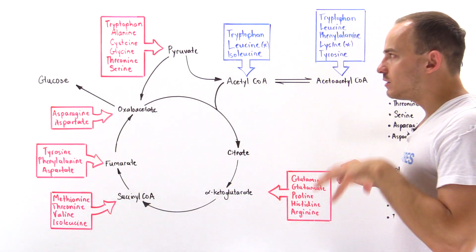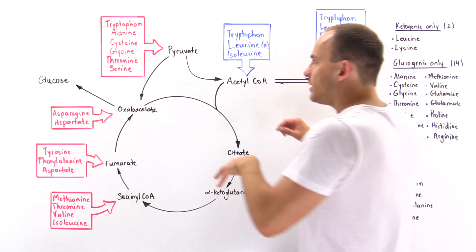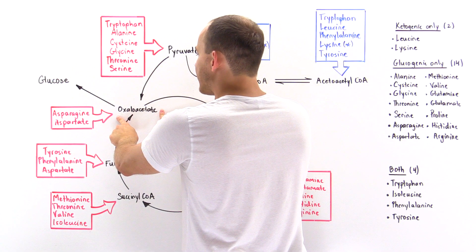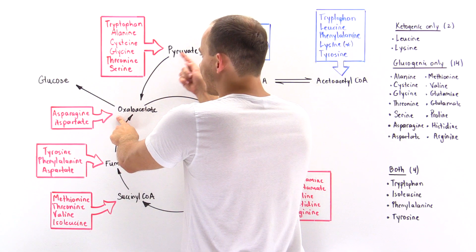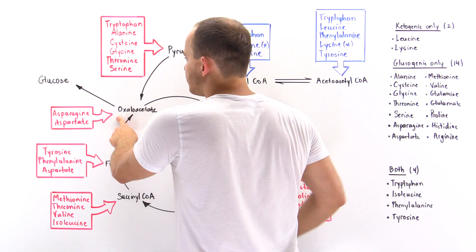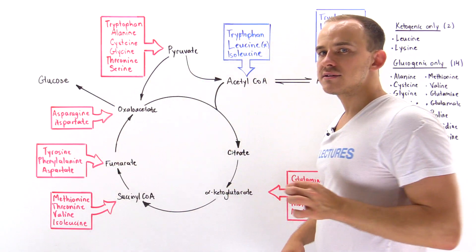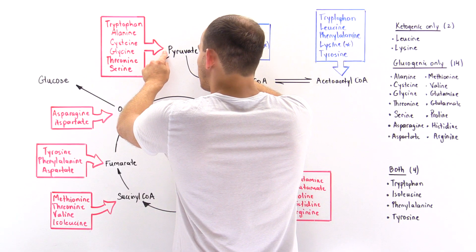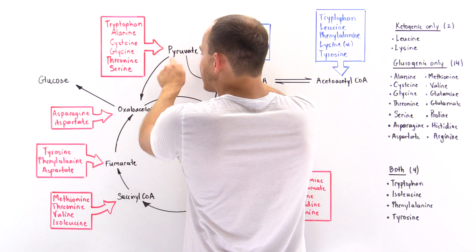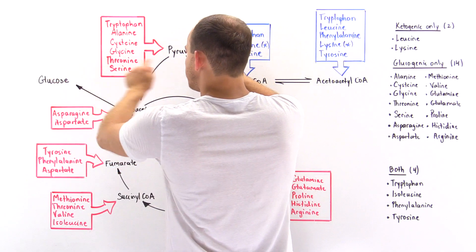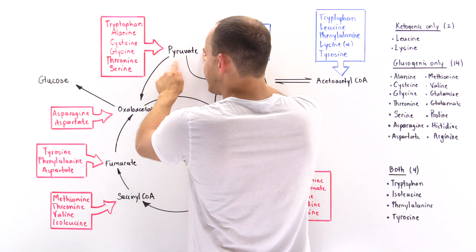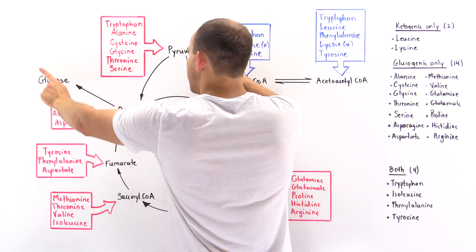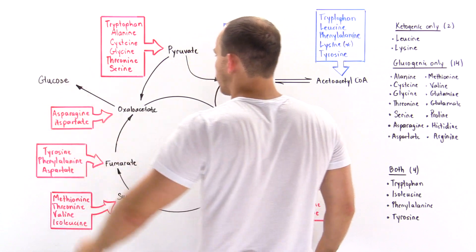Inside our liver, we can use pyruvate to form oxaloacetate. This pathway is catalyzed by the enzyme pyruvate carboxylase. That means we can use pyruvate to actually help us generate glucose, because if we transform pyruvate to oxaloacetate, we can then use this in gluconeogenesis to help us form glucose.